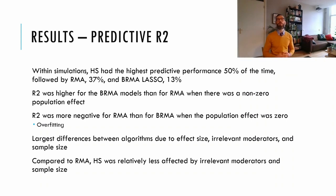We also found that some of the design parameters had an effect on model performance, and the largest differences between algorithms were due to the effect size, the number of irrelevant moderators, and the sample size. Importantly, compared to industry standard RMA analysis, BRMA with a horseshoe prior was relatively less affected by the number of relevant moderators, and the sample size, once again suggesting that this is a suitable method to perform variable selection, even in small samples.